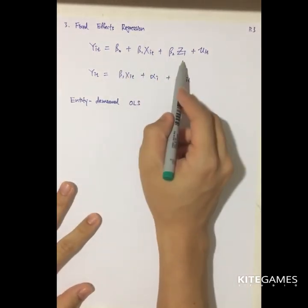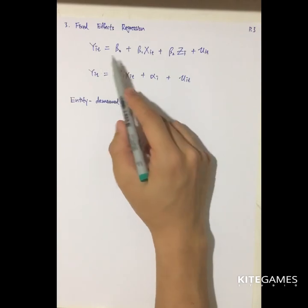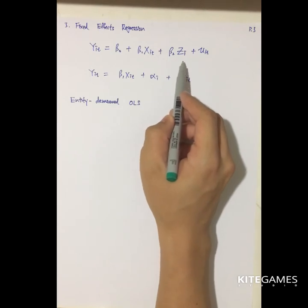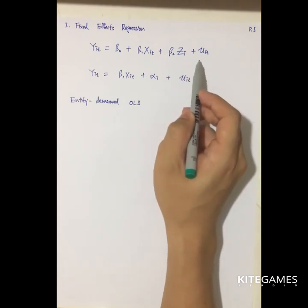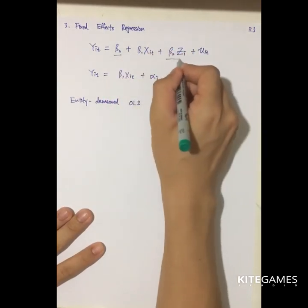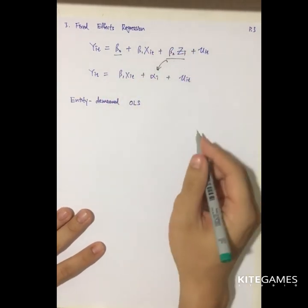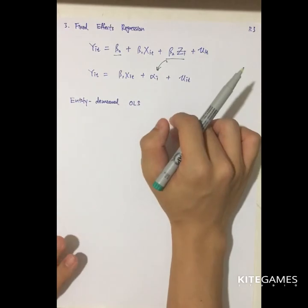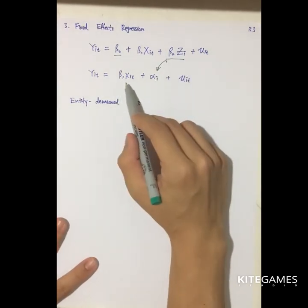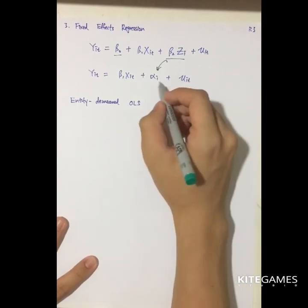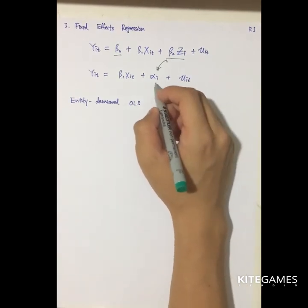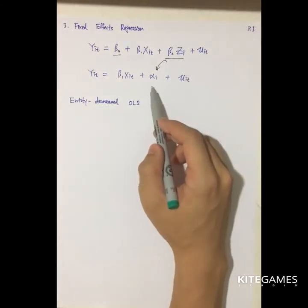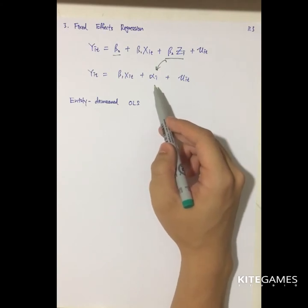The model derived earlier is: y_it equals beta-0 plus beta-1 times x_it plus beta-2 times z_i (constant across time) plus error term. We combine beta-0 and beta-2 times z_i into a single term alpha_i, simplifying the equation to: y_it equals beta-1 times x_it plus alpha_i plus u_it. Alpha_i is called the fixed-effect parameter because it is constant across different time periods.